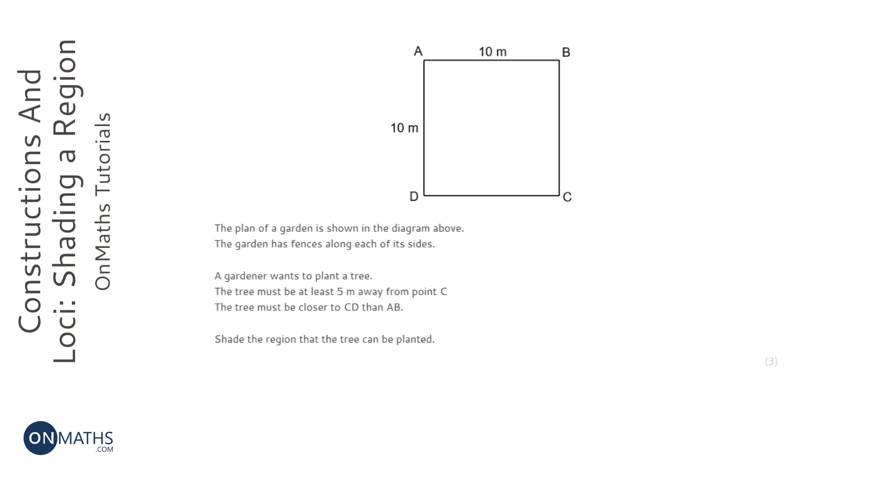Okay, so for this question we're given a plan of a garden and we're given a set of instructions of where the tree can be planted. It says that we can't be any closer than five meters, so at least five meters away from point C. So that's from here, let's have a look at that first.